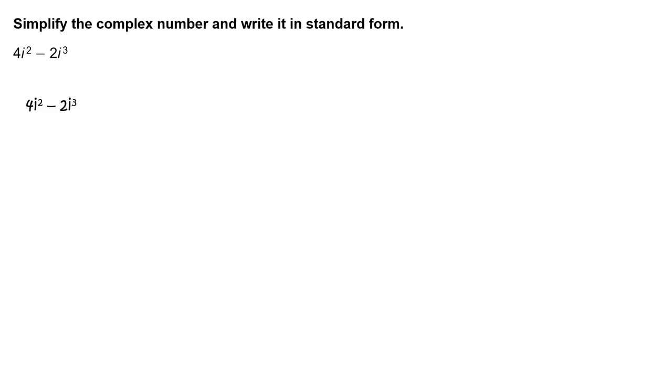First, write 4i squared minus 2i cubed. Rewrite as 4i squared minus 2i squared times i.